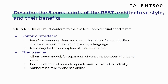The first constraint is uniform interface — it's an interface between the client and the servers that allows standardized communication between both of them in a single language. It also helps to decouple the client and the server. Second is client-server: the client-server model helps to separate concerns between the client and the server.